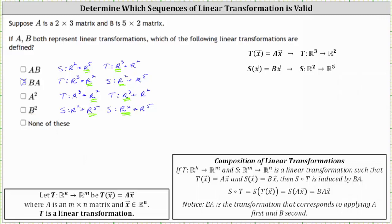For A times B, we multiply a two by three matrix by a five by two matrix. The number of columns in the first matrix must equal the number of rows in the second — three does not equal five, so the multiplication is undefined, and so is the corresponding composition of linear transformations. For B times A, we have a five by two matrix times a two by three matrix. The number of columns in the first does equal the number of rows in the second, so the multiplication is defined, and so is the corresponding composition.